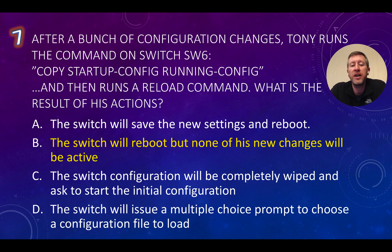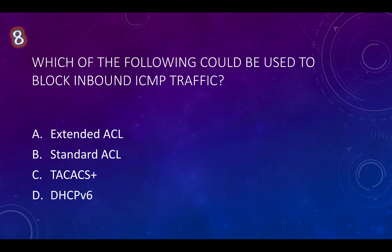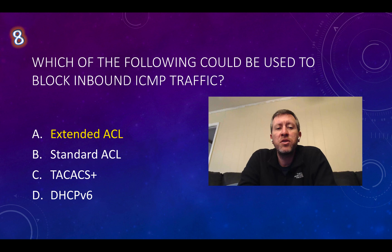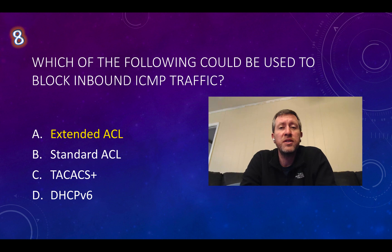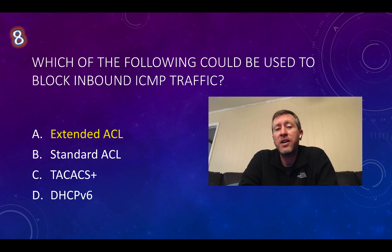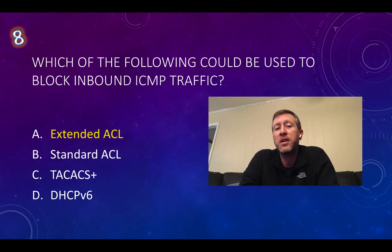Question number eight: which of the following could be used to block inbound ICMP traffic? TACACS+ and DHCPv6 have nothing to do with blocking traffic. A standard access control list allows filtering based on source IP addresses only. If you want to block by protocol or port — such as blocking ICMP specifically — you would use an extended access control list to perform that type of filtering.